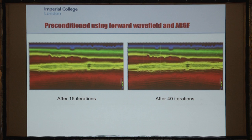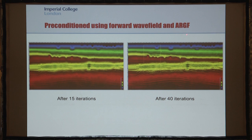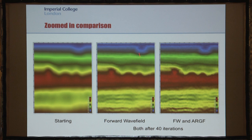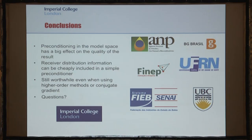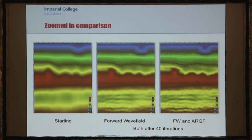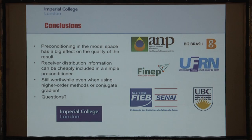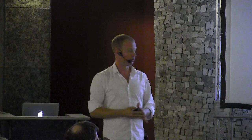A zoomed-in version of these results is shown on the next slide, comparing forward wave field preconditioning only versus incorporating receiver locations into the Hessian. In summary, preconditioning in the model space can have a relatively big effect on result quality, and receiver distribution information can be very cheaply included in a simple preconditioner. This is still worthwhile even when using higher order methods or conjugate gradients. Finally, I'd like to thank all the sponsors of the meeting, Chevron for the test dataset, and the Full Wave Consortium for funding my research.